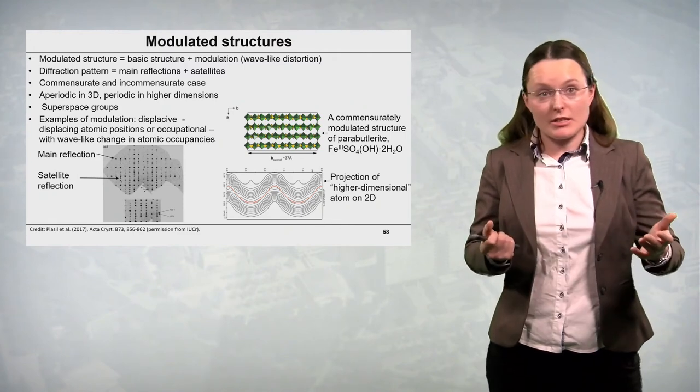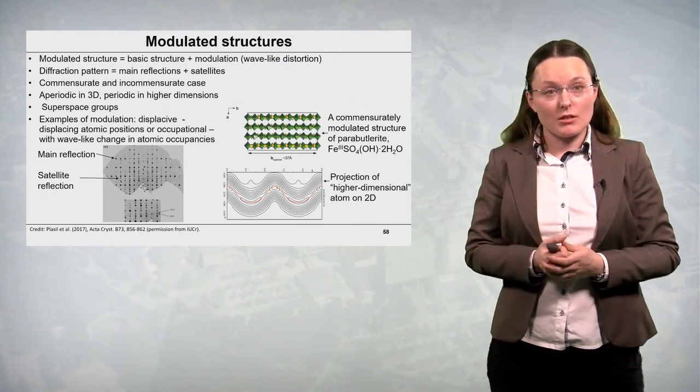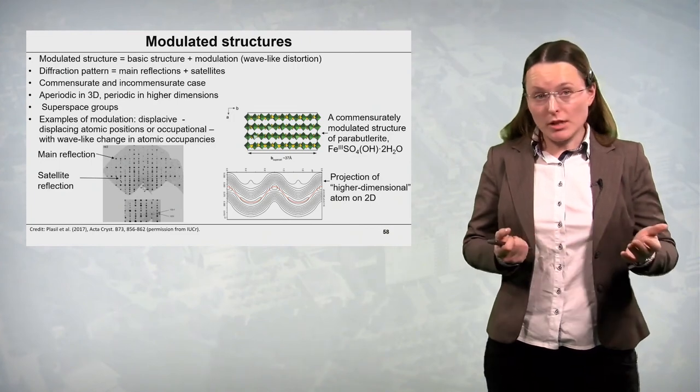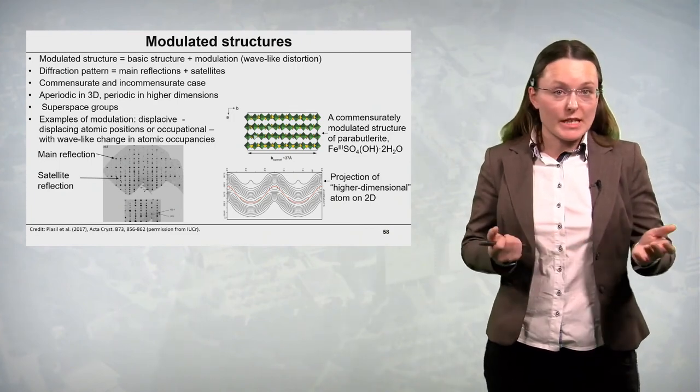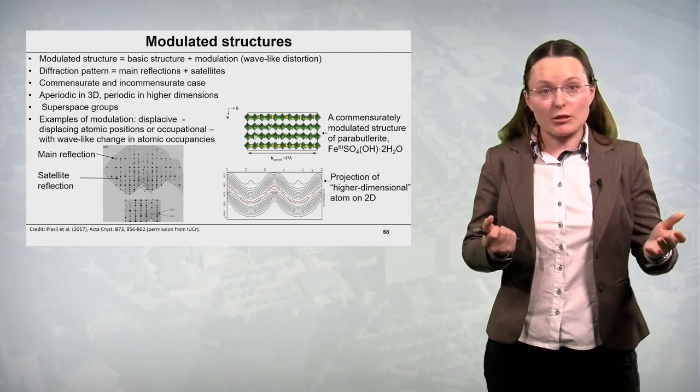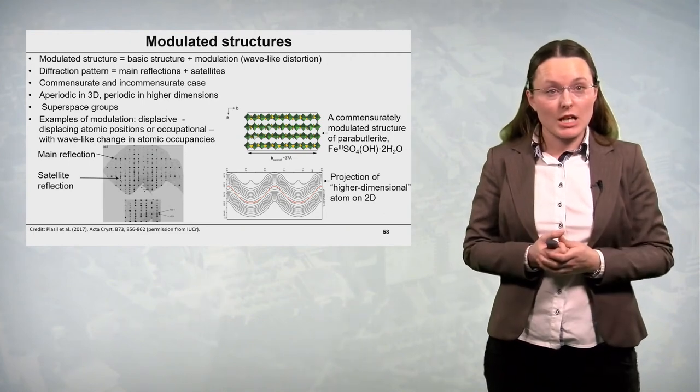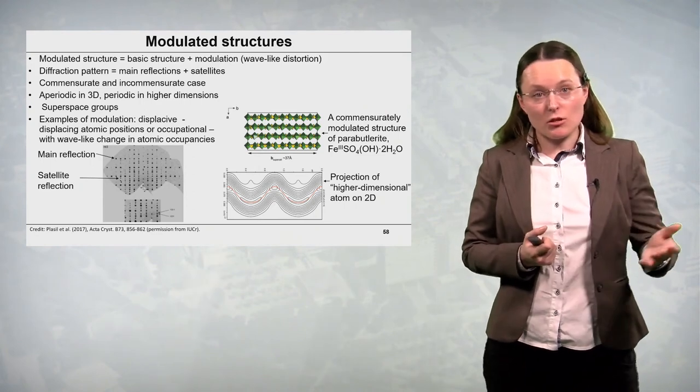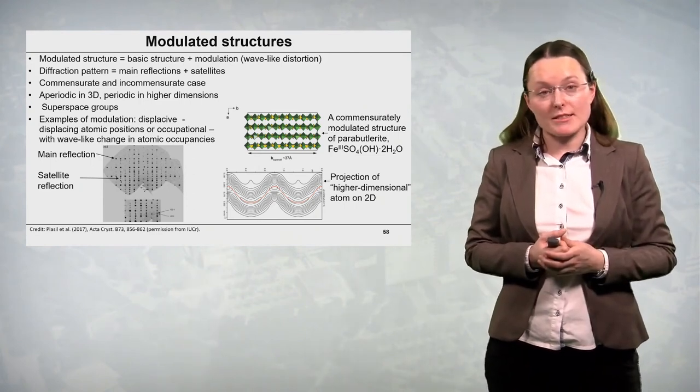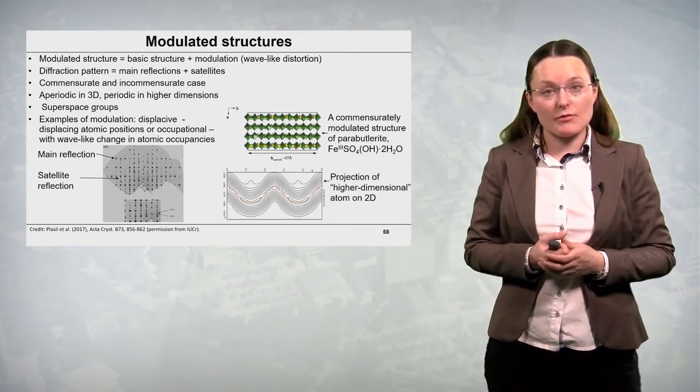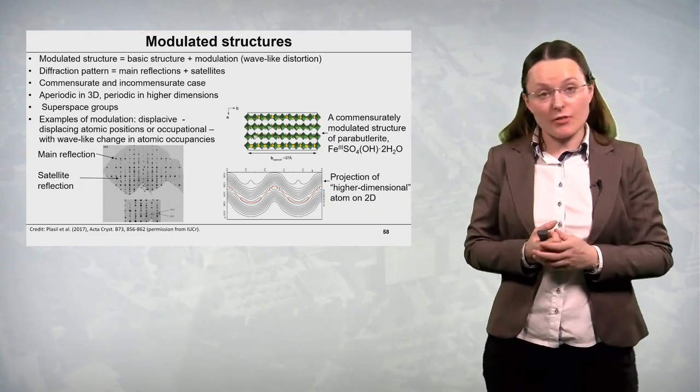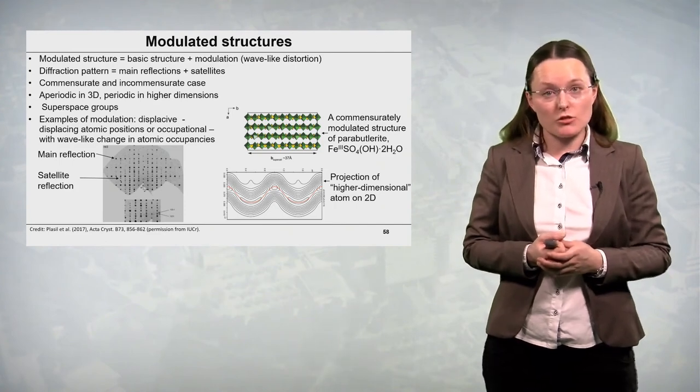Modulation can be displacive in atomic positions. Or occupational for instance where the wave-like distortion affects atomic occupancies of specific crystallographic site. And on the slide you can see an example of the diffraction pattern for modulated structure. An example of a commensurately modulated structure of a mineral.